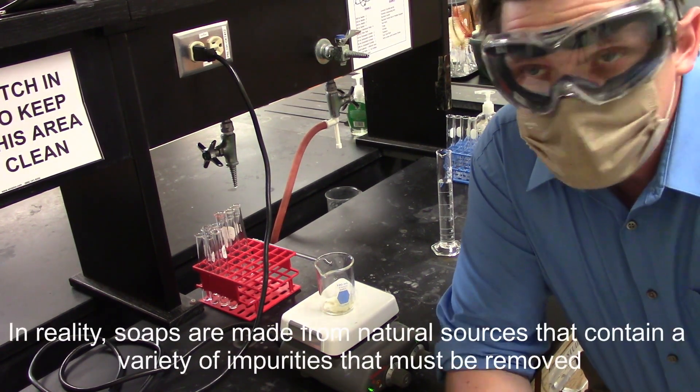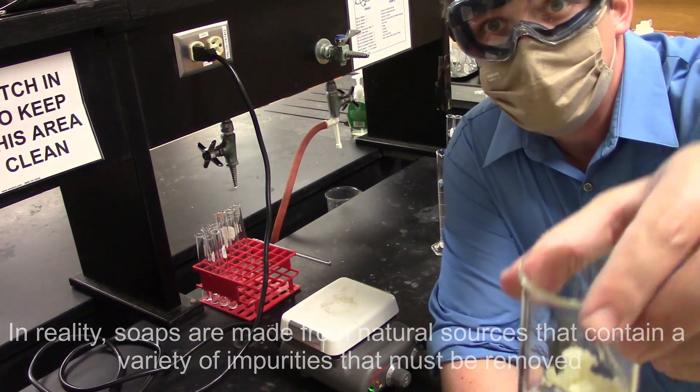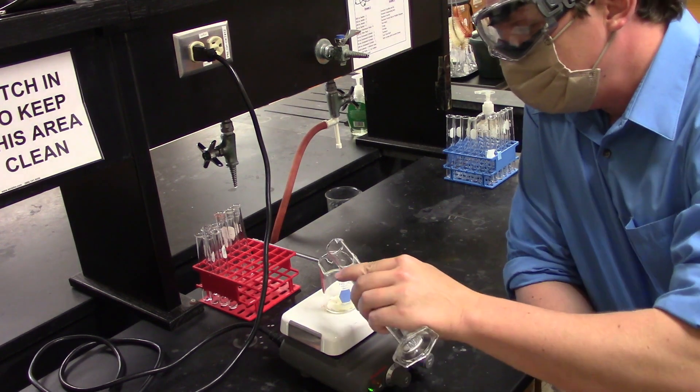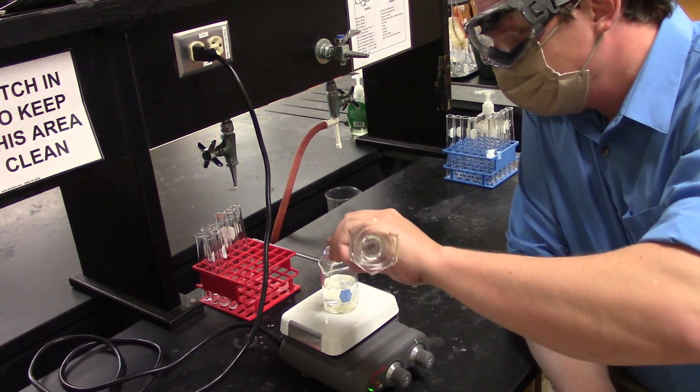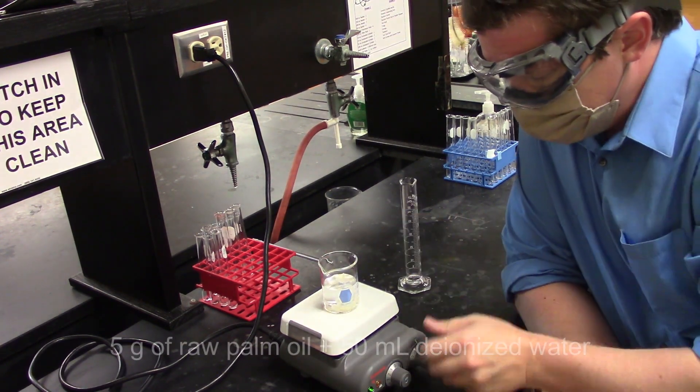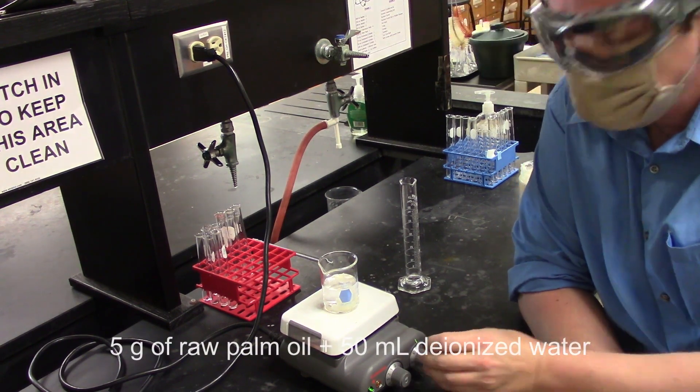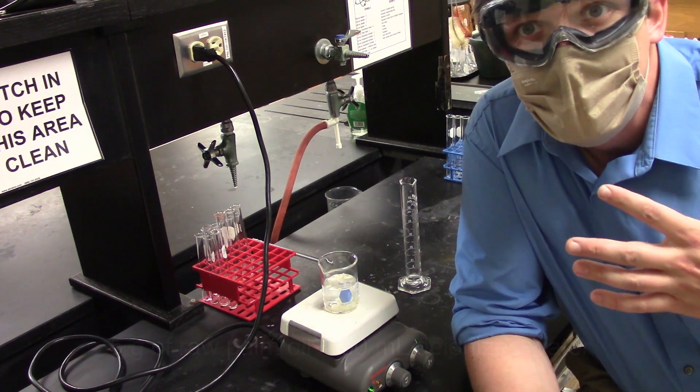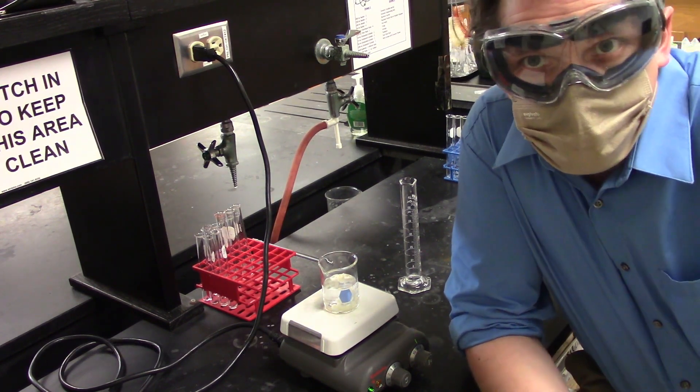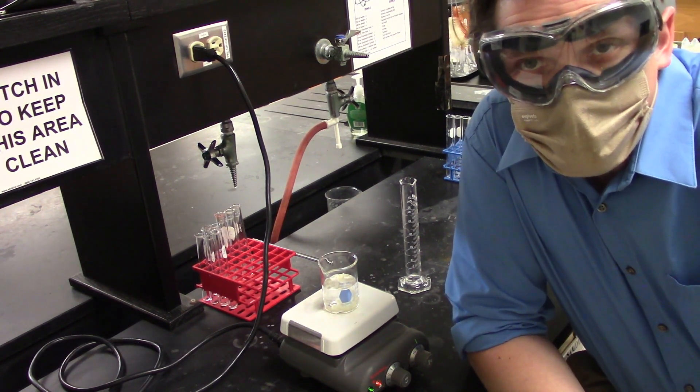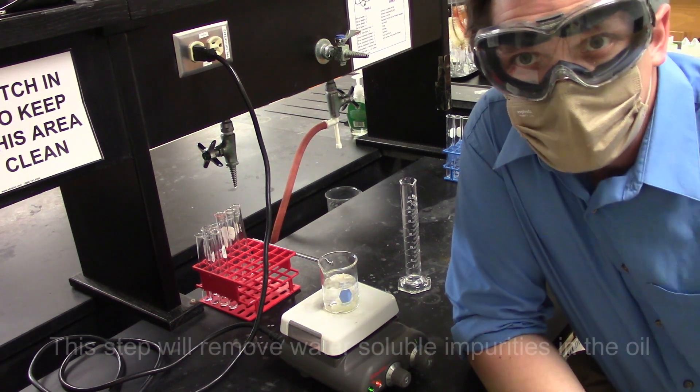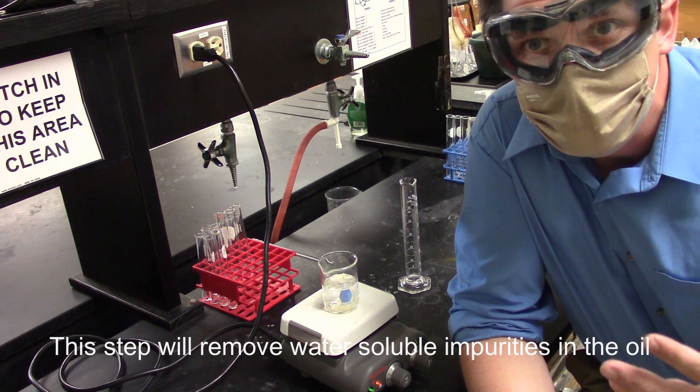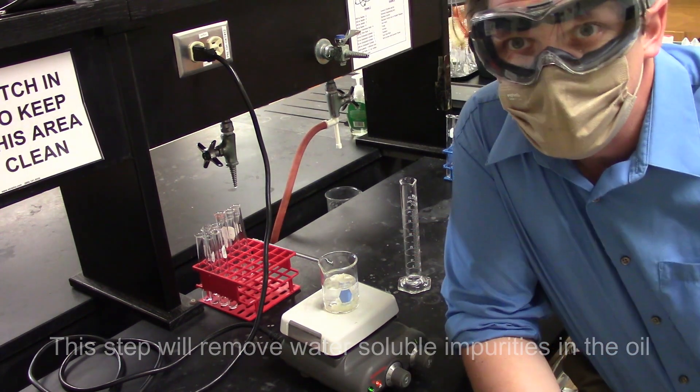So as a first step, we take five grams of our raw palm oil. We're going to add 50 mL of deionized water and heat this up to pretty high temperatures to the point that we begin to melt the palm oil and it liquefies. The reason we're going to do this is that there are water-soluble impurities in the raw palm oil, and so by heating it up we liquefy it and get good contact between the aqueous phase and the raw material we're starting with.